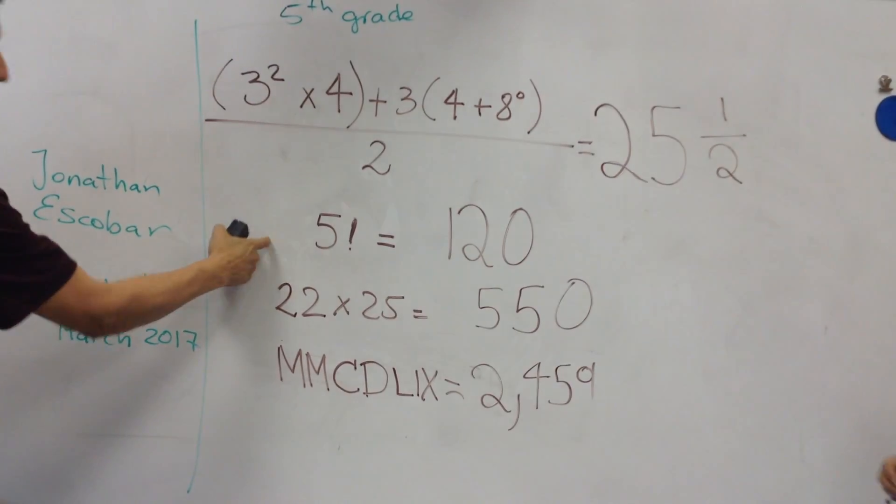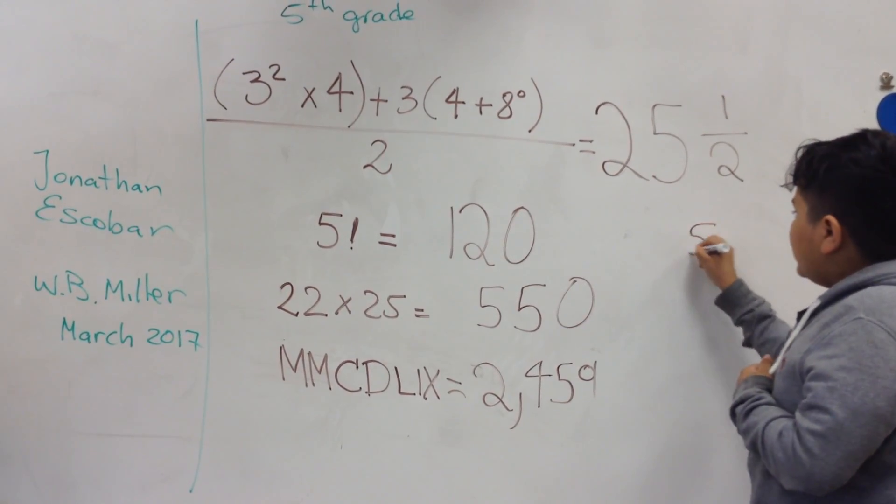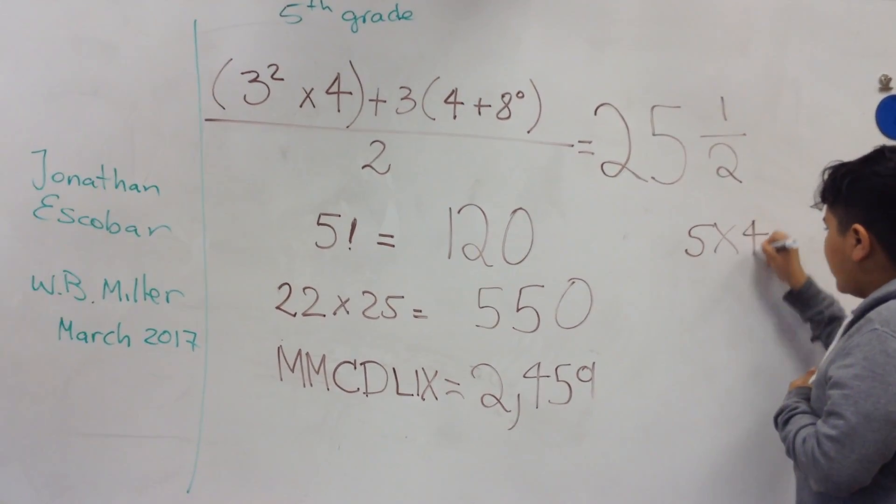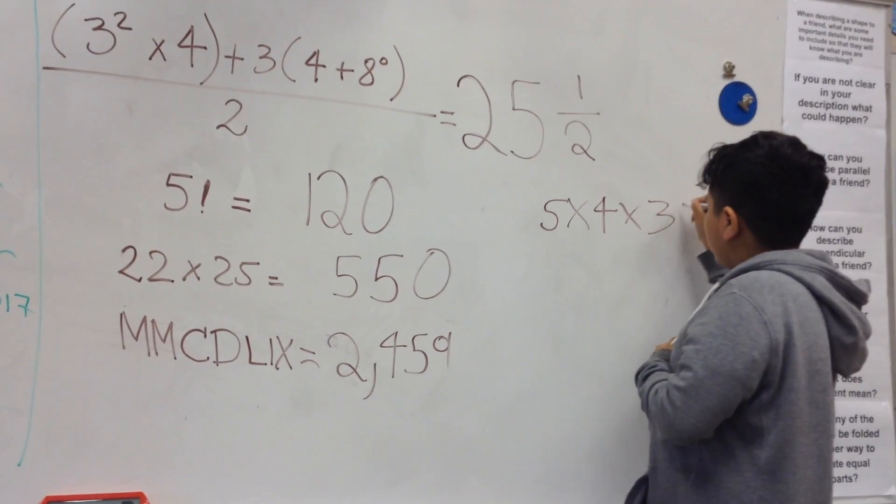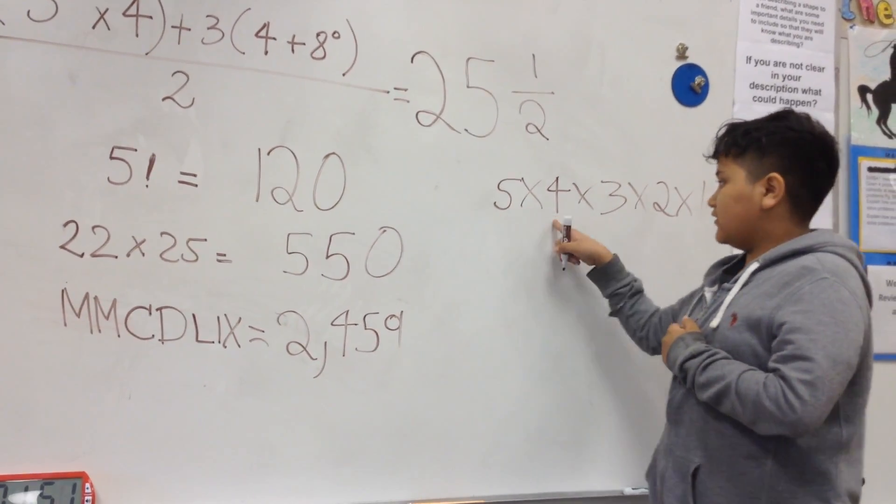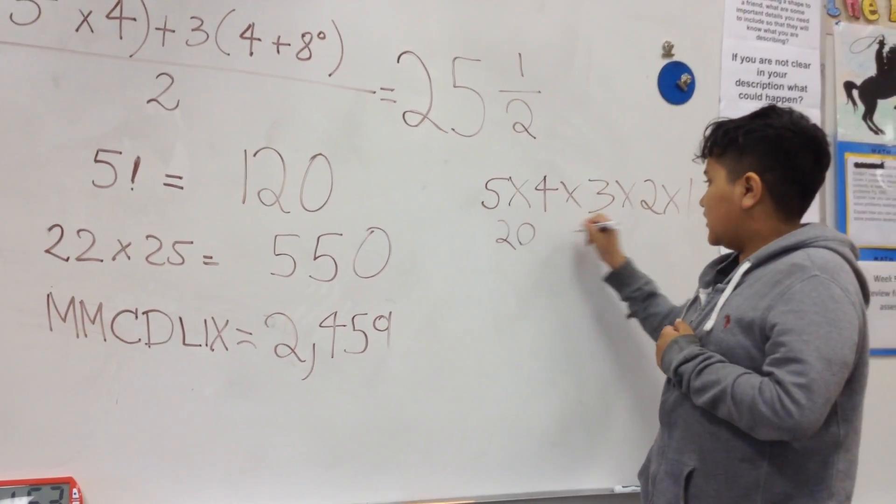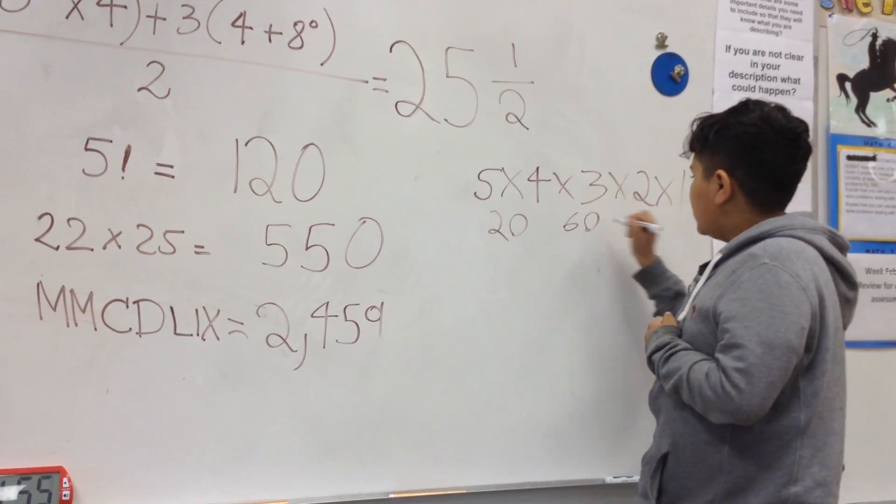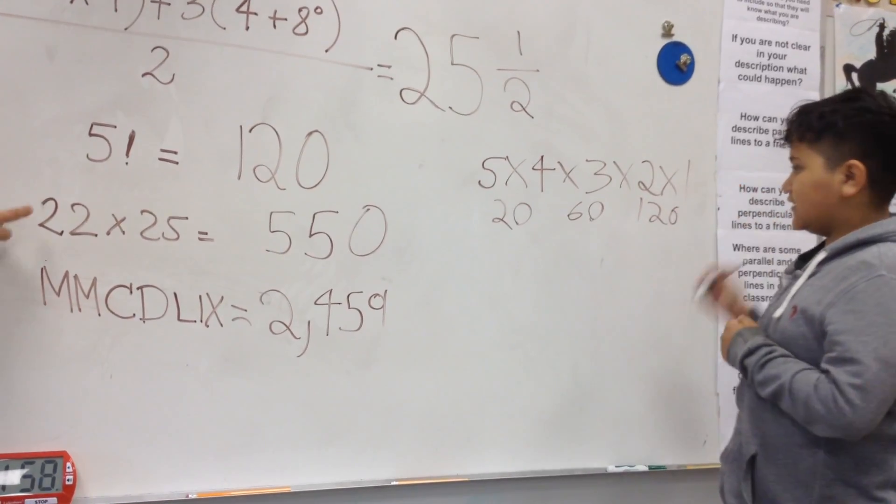Okay, what about this? That's five times four times three times two times one. Five times four is twenty. Times three is sixty. Times two is one hundred twenty. What about this?